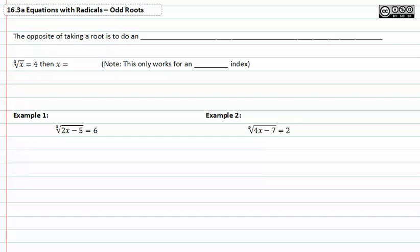When working with equations with radicals, it's important to remember that the opposite of taking the square root of both sides is to raise both sides of the equation to an exponent.